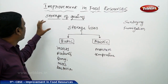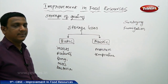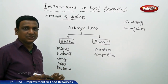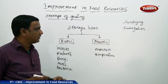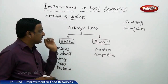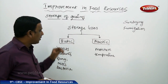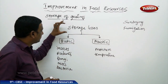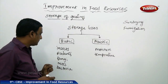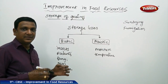Under crop protection management, storage of grains is also very important. There are losses to the farmer during storage. Storage losses are of two different types: biotic and abiotic. The biotic factors which cause loss of grains include insects, rodents, fungi, mites, and bacteria.